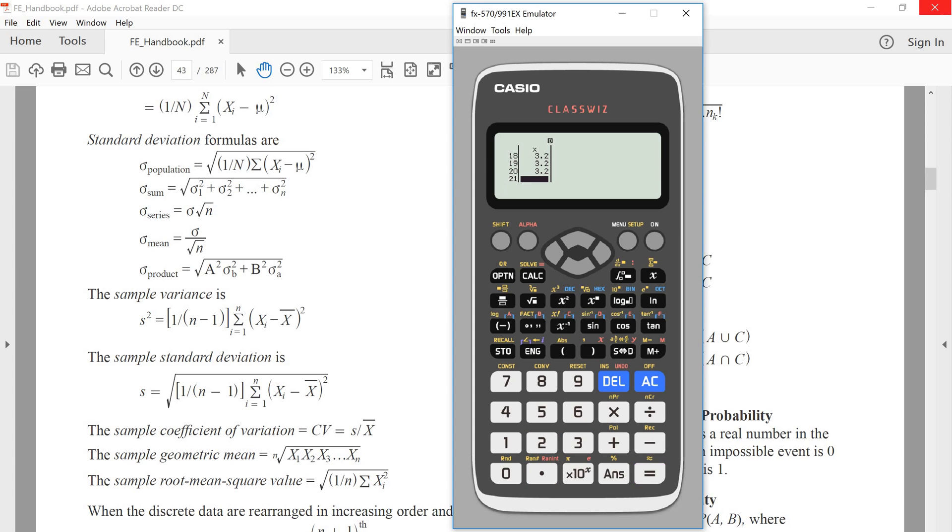You can plug in all those numbers, and then once you've entered all the data, we can hit the AC button, which is right here. Hit it once and then we get this screen called Statistics One Variable.